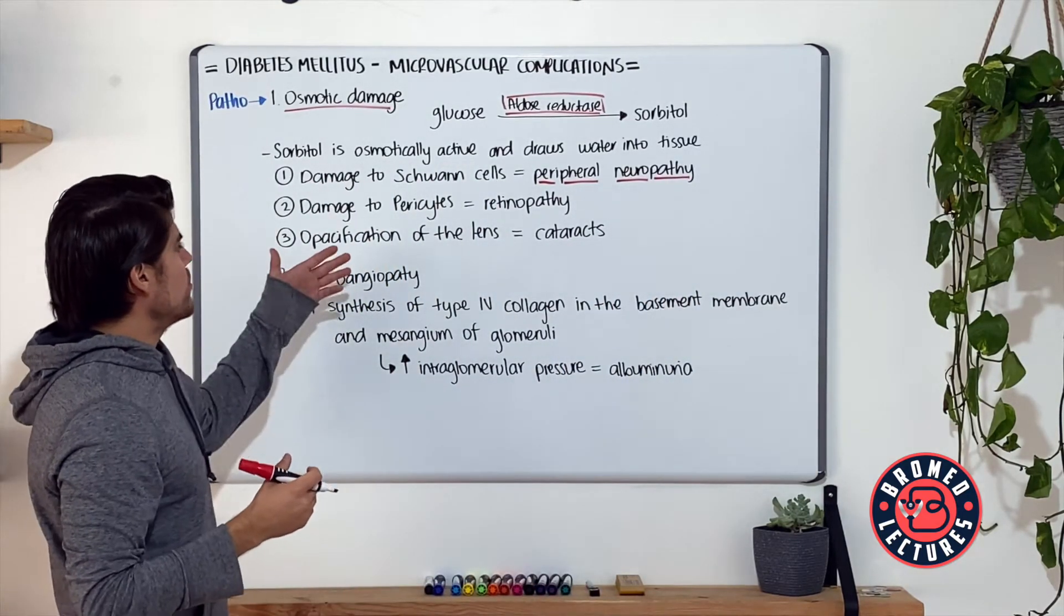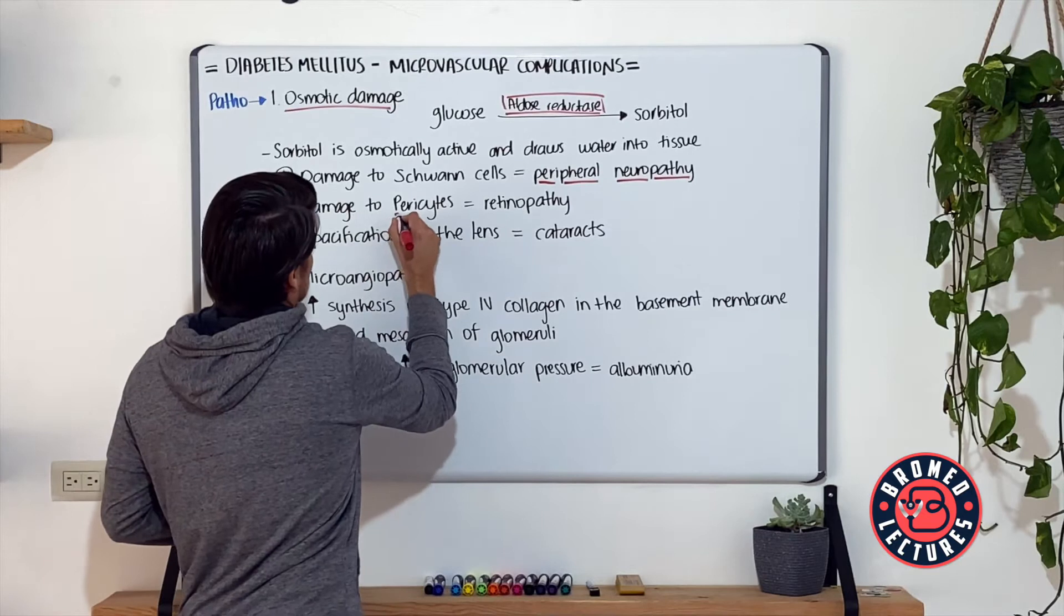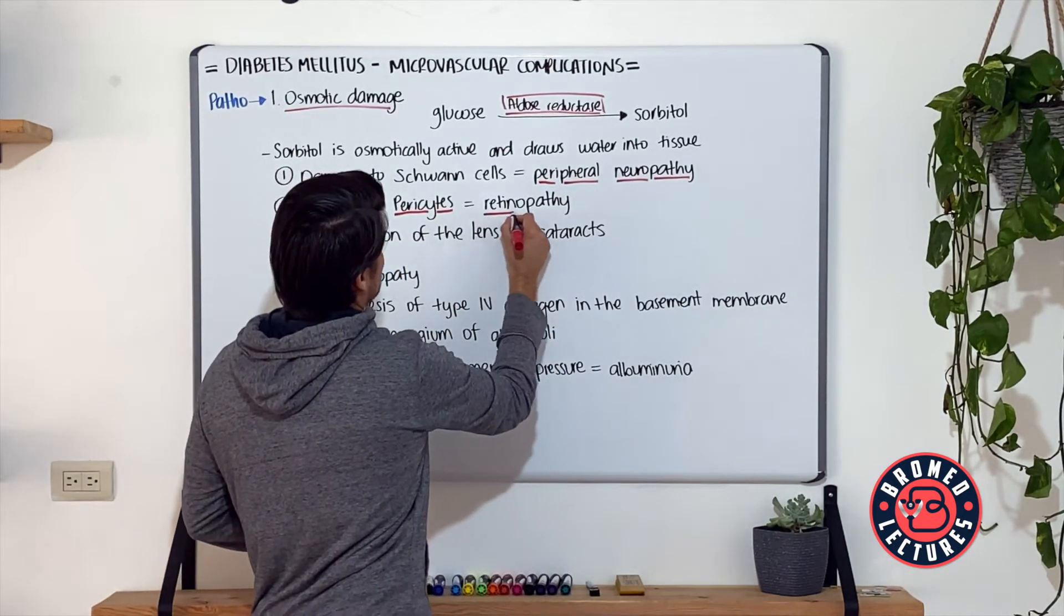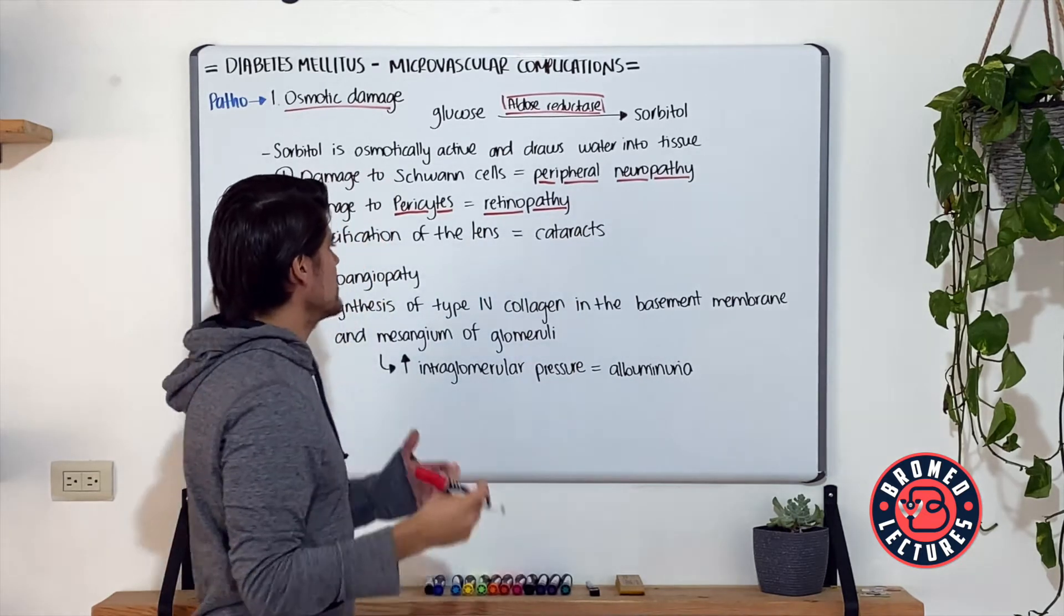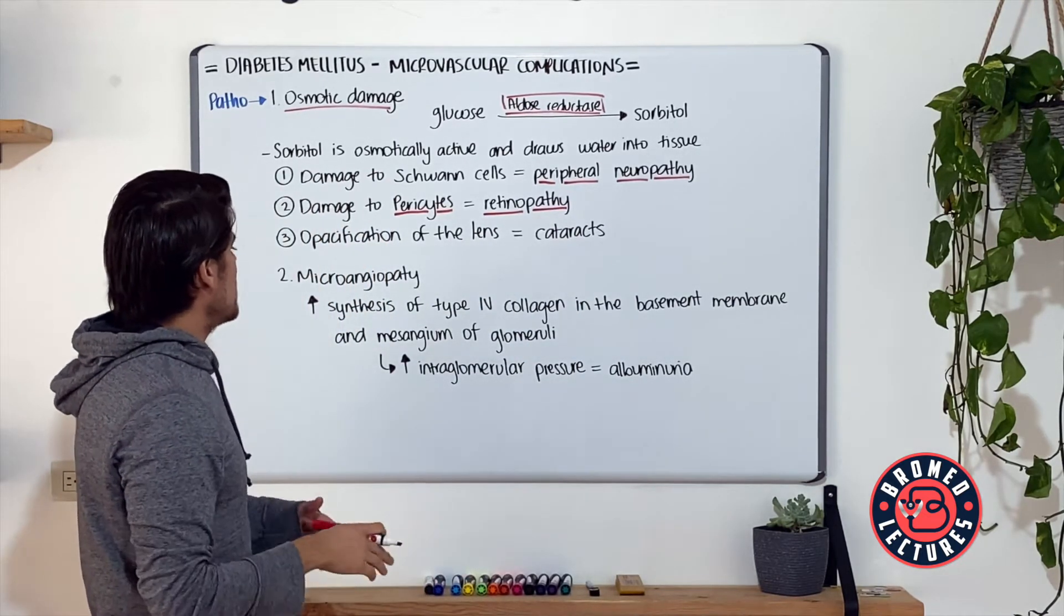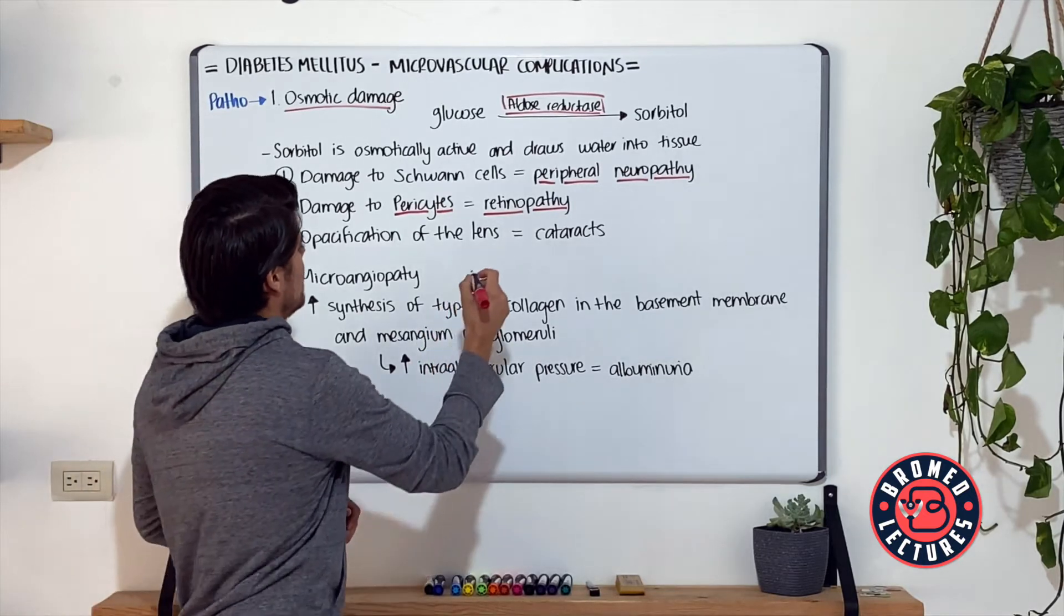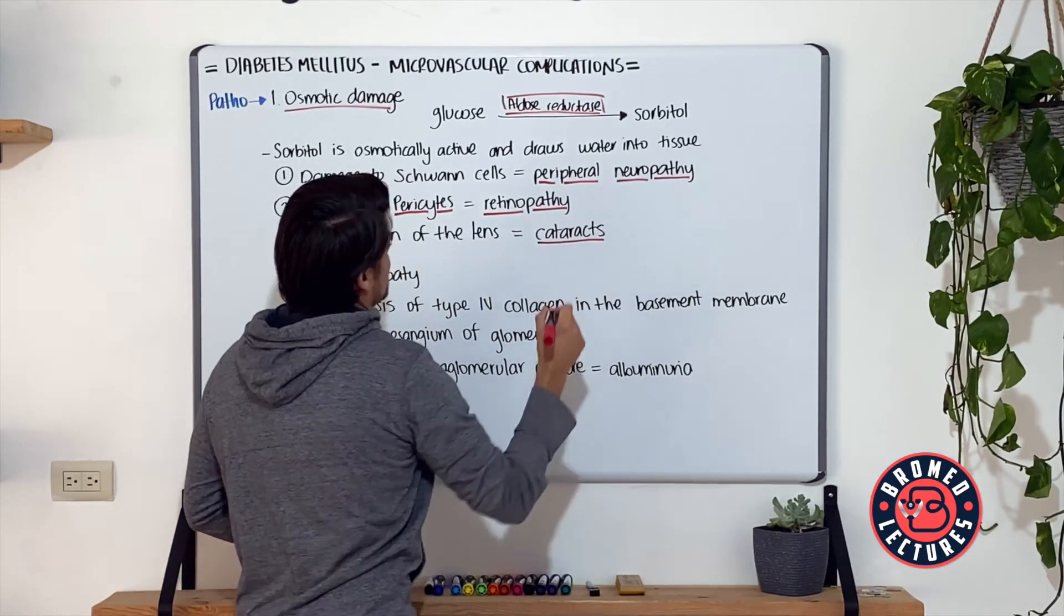Damage to pericytes in the retina endothelium causes retinopathy because of the formation of microaneurysms. If there is accumulation of sorbitol inside the lens, then that leads to formation of cataracts.